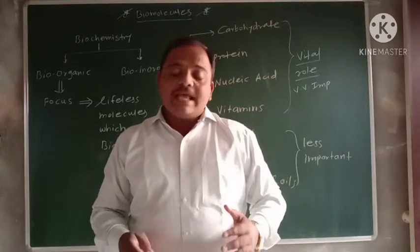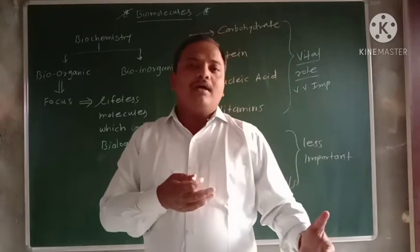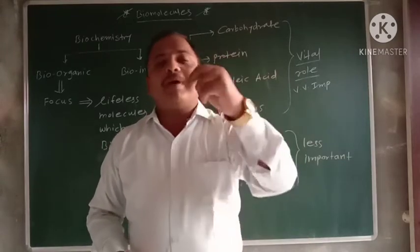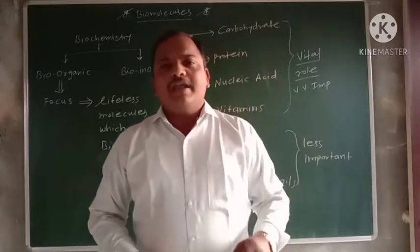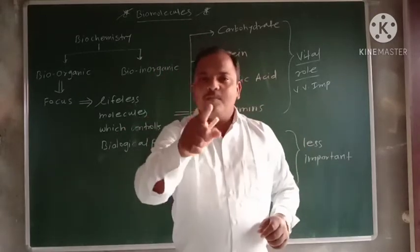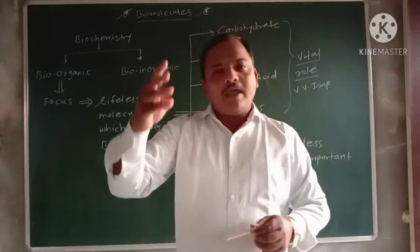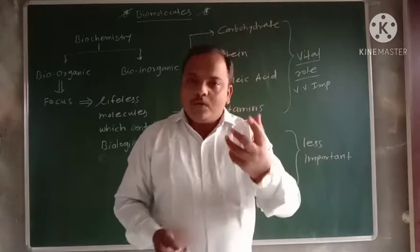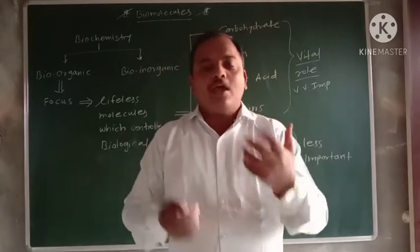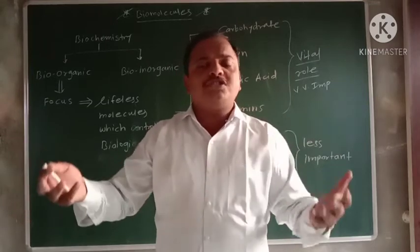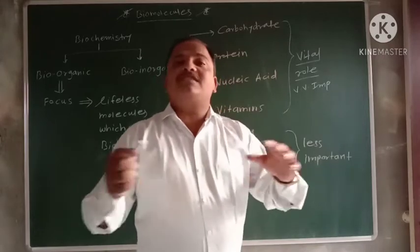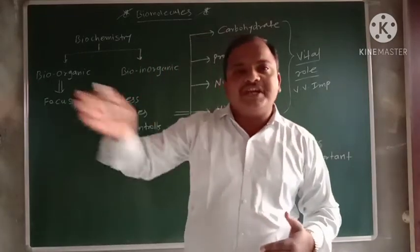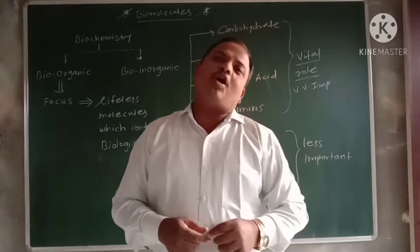Nucleic acids are responsible for hereditary characters — the transmission of hereditary characters from one generation to another. The two types are DNA (deoxyribose nucleic acid) and RNA (ribose nucleic acid). The nitrogenous bases include purines and pyrimidines: adenine, guanine, cytosine, and thymine.